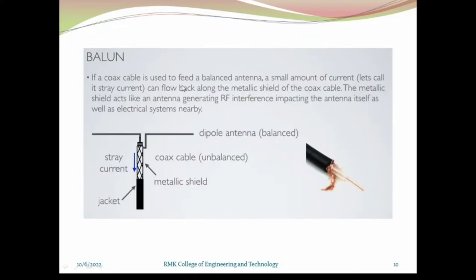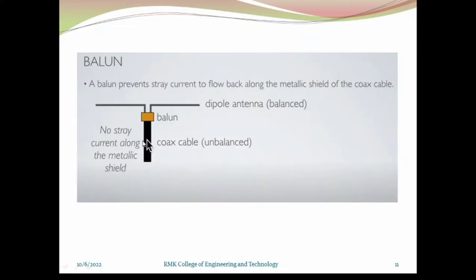Now, how a balun will be connected, or when will a balun be connected? Here is the dipole antenna placed at the top — it is purely balanced. The dipole antenna is connected with the coaxial cable, which is the unbalanced cable. So while joining these two different categories, we need a balun system. The balun is going to match the impedance between the two. The yellow box in the diagram is the structure of the balun, matching the impedance between the coaxial cable and the dipole antenna.